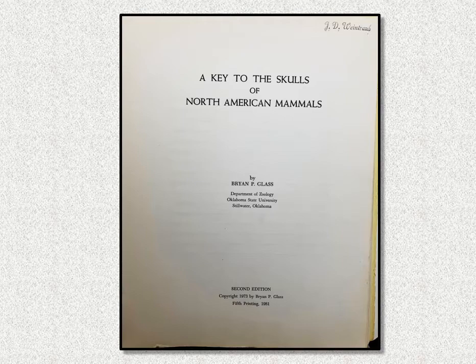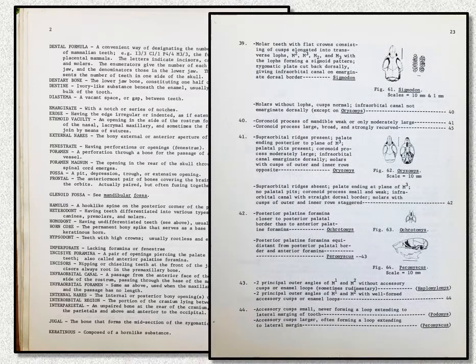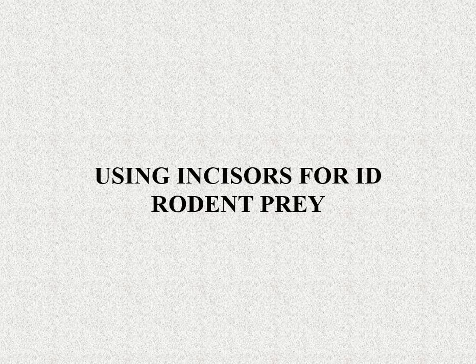So how do you identify prey species? There are keys to the skulls of North American mammals. This particular one by Brian Glass is still being sold on Amazon. It requires a large amount of definitions and vocabulary and is filled with pictures of the skulls of various animals — from an elk all the way down to a little harvest mouse, which you certainly won't expect in an owl pellet. There's also a key in the book Mammals of the Pacific States by Ingalls. But there's an easier way of doing it.